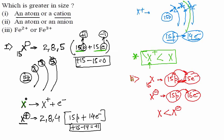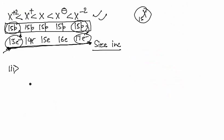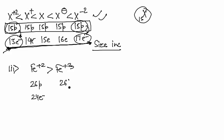The third part is simple: which is larger, Fe²⁺ or Fe³⁺? Fe has 26 protons. Fe²⁺ has 24 electrons and Fe³⁺ has 23 electrons. The hold is stronger in Fe³⁺, so its size is smaller. Therefore Fe²⁺ has a greater ionic size than Fe³⁺.